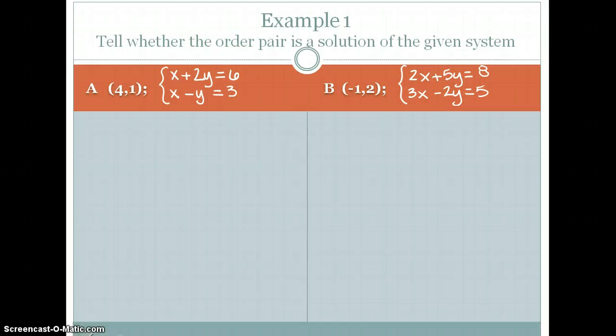The first example says to tell whether the ordered pair is a solution of the given system. A system of equations is made up of two or more linear equations. If you have more than two, it would add on variables. So a system of three equations would have three variables, so x, y, and z. We will only be working with systems that have two variables, so an x and a y.